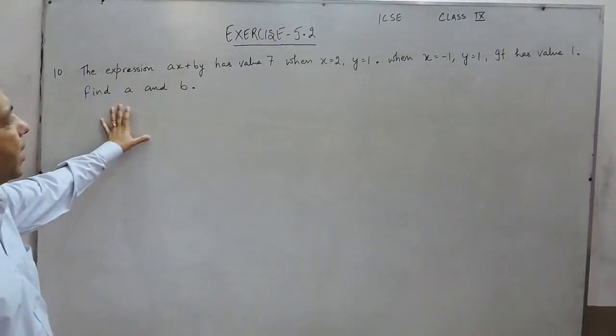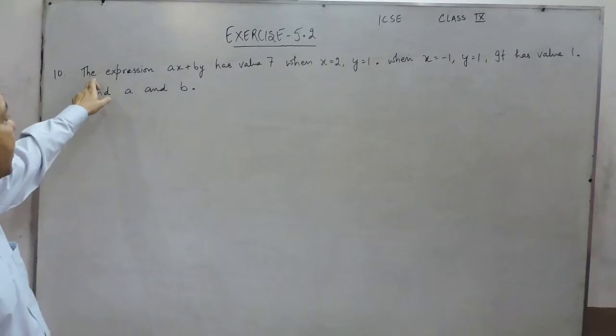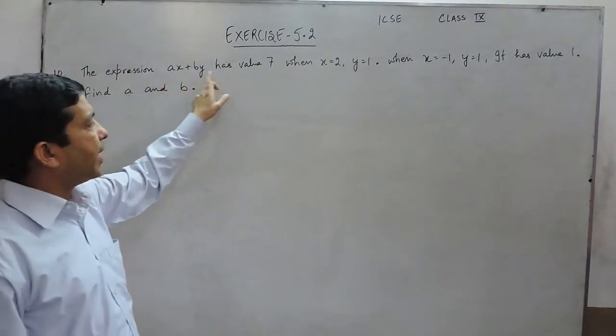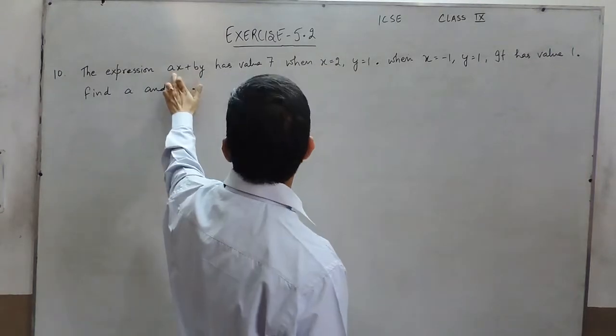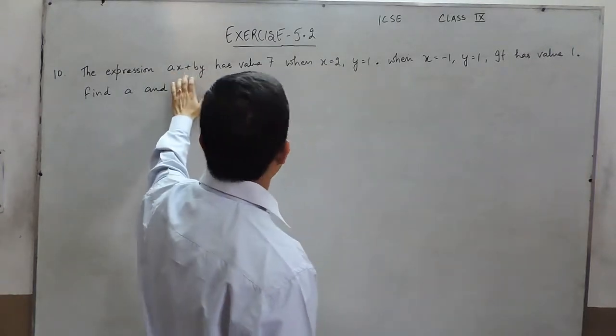Hello everyone, question number 10 of exercise 5.2: the expression ax plus by has a value 7 when the value of x is 2 and the value of y is 1.